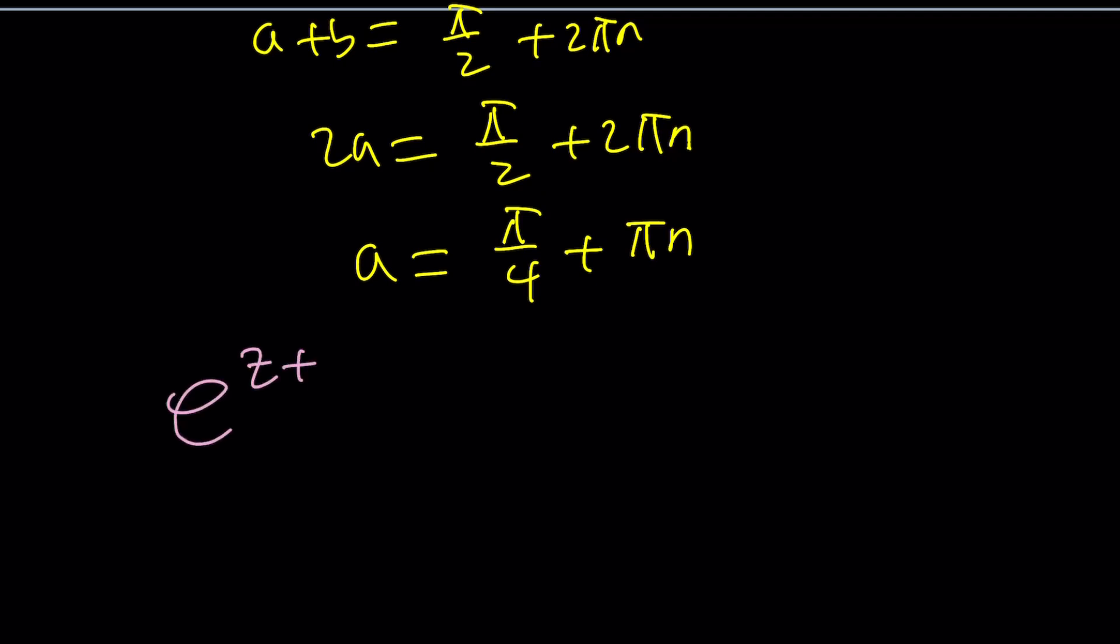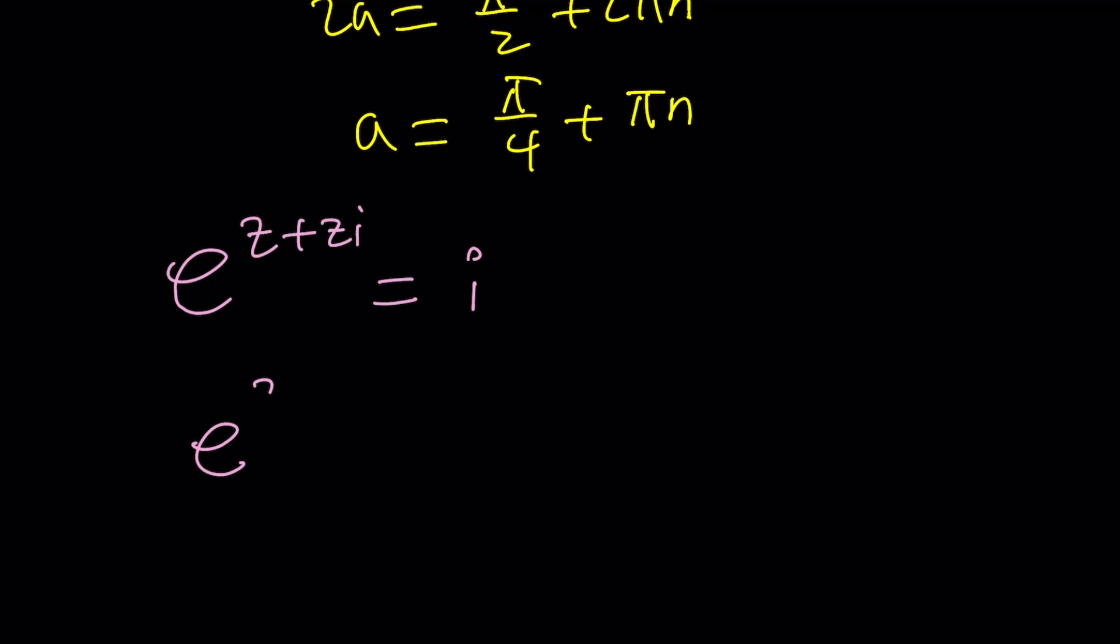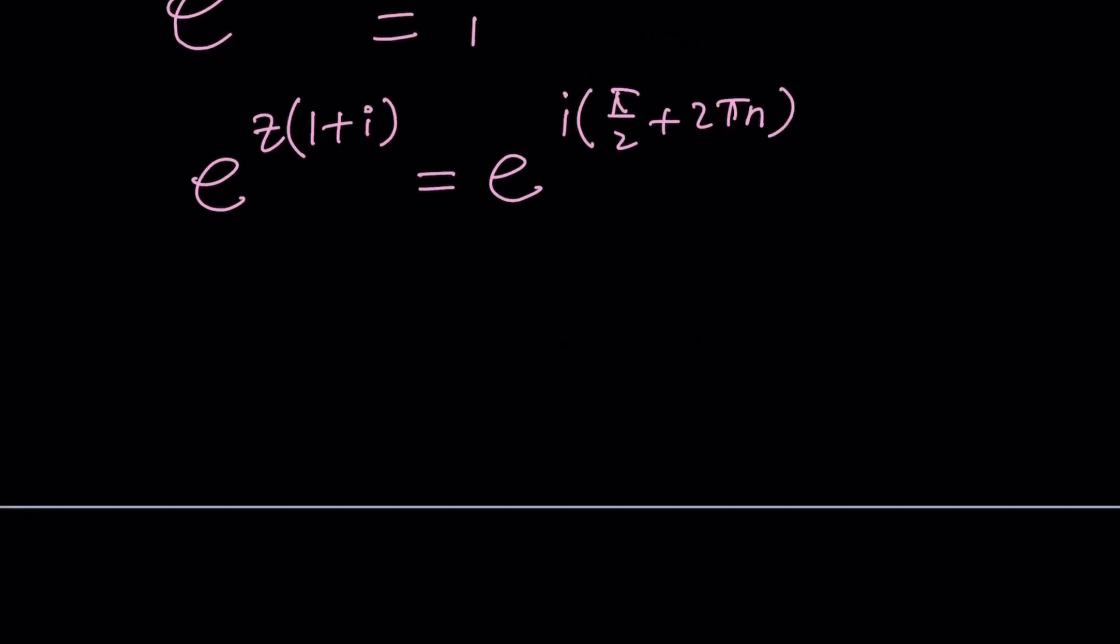So we're just going to directly solve this. How? Well first of all notice that we can factor out the z is that going to help I think so. Let's go ahead and separate those and then write this as e to the power i times pi over 2 plus 2 pi n awesome.